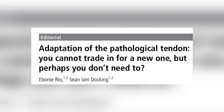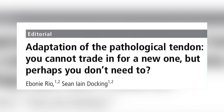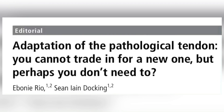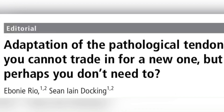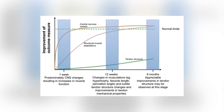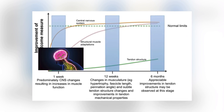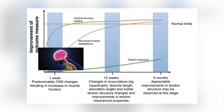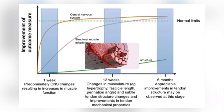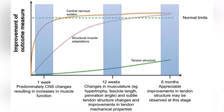This was covered by Ebony Rio and Sean Docking in their editorial titled 'Adaptation of the Pathological Tendon.' You cannot trade in for a new one, but perhaps you don't need to. They had a graph showing that in the initial stages of rehab, decreases in pain are mainly from changes in the central nervous system. At about 12 weeks, you start to see changes in the musculature, and at about 6 months, you start to see changes to the tendon.